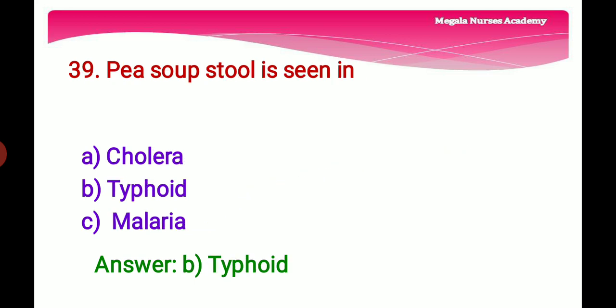Thirty-ninth question: Pea soup stool is seen in — Option A: Cholera, a waterborne disease caused by Vibrio cholerae. Option B: Typhoid, a Salmonella typhi infection spreading through contaminated food and water. Option C: Malaria, caused by Plasmodium parasite transmitted by infected mosquito bite. The right answer is Option B, typhoid, because green pea soup appearance of stool is characteristic of typhoid fever.